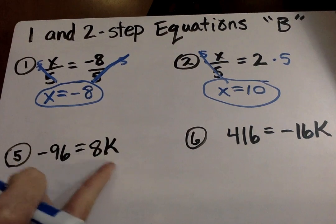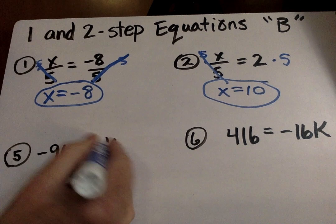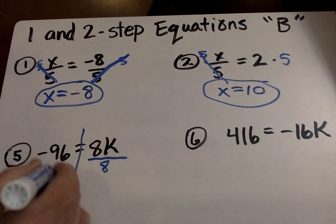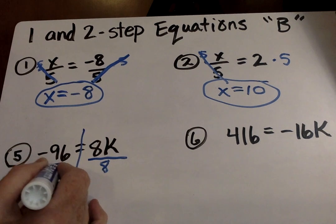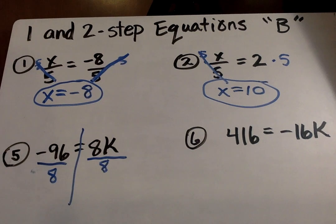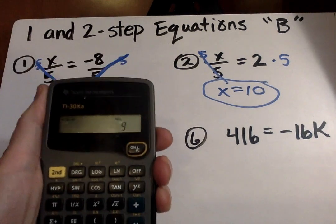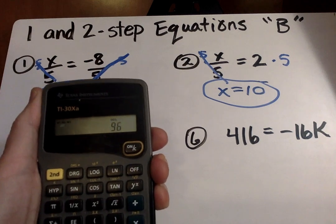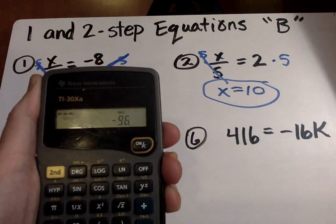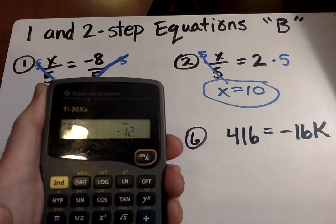So eight times K, this is where the variable is. So I divide by the number in front of the variable, because that's multiplied. Whatever I do on one side of the equation, I do on the other. Now, if I want to do it on my calculator, I'm going to put 96. And then I'm going to put the plus minus. Make sure it says negative 96. Put the divide eight equals. And there's my answer.